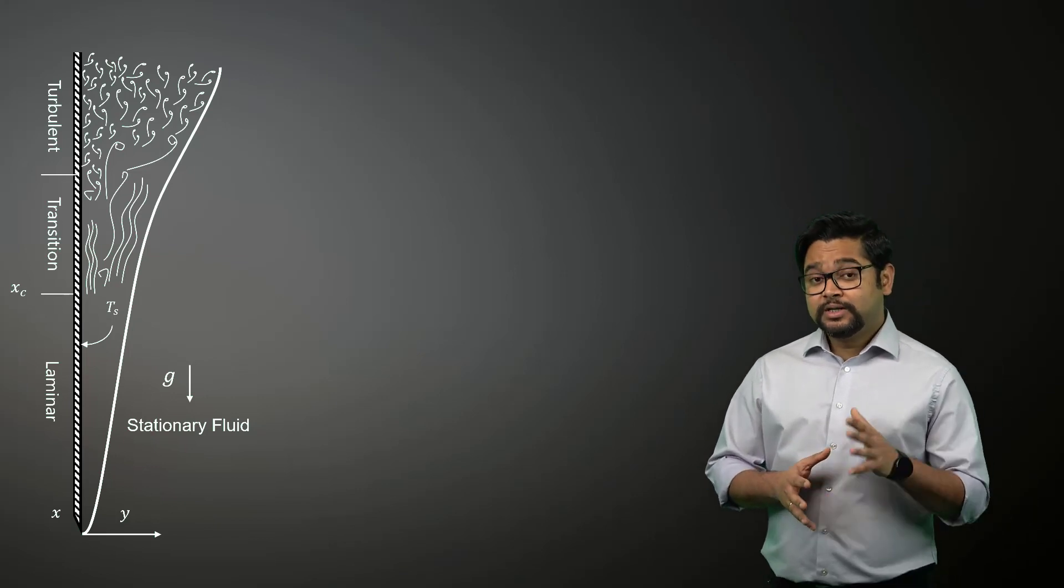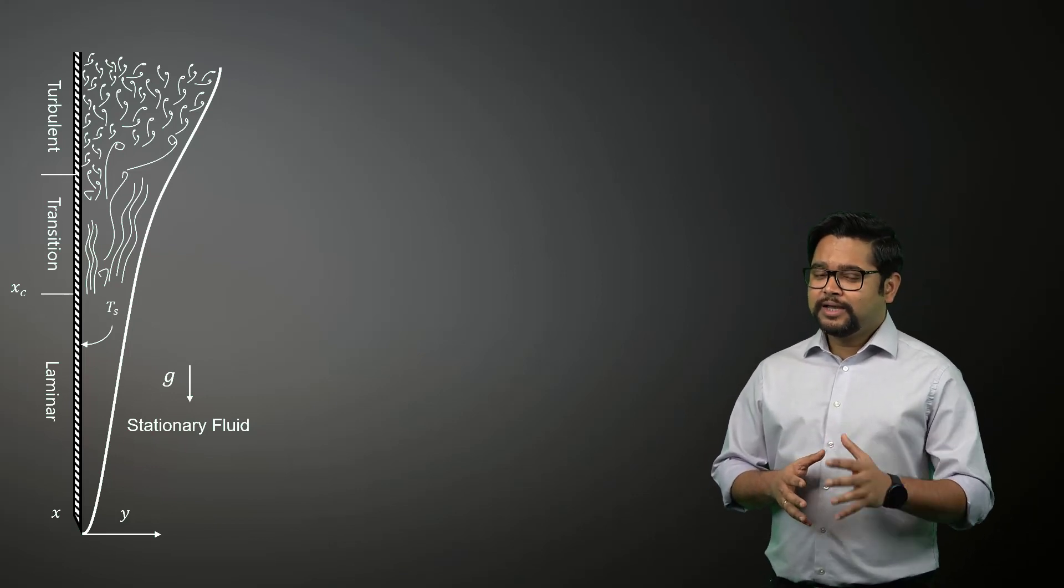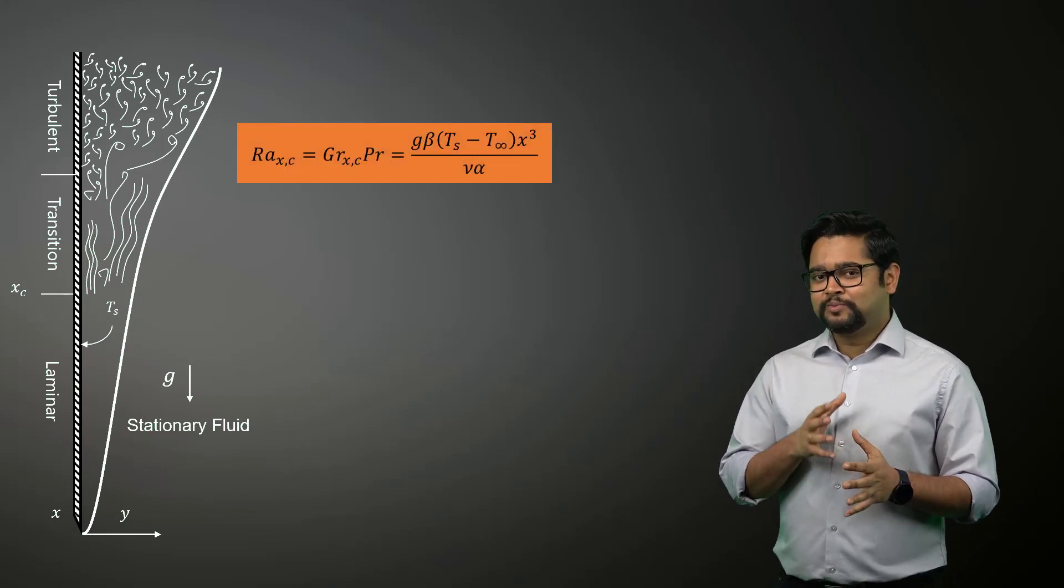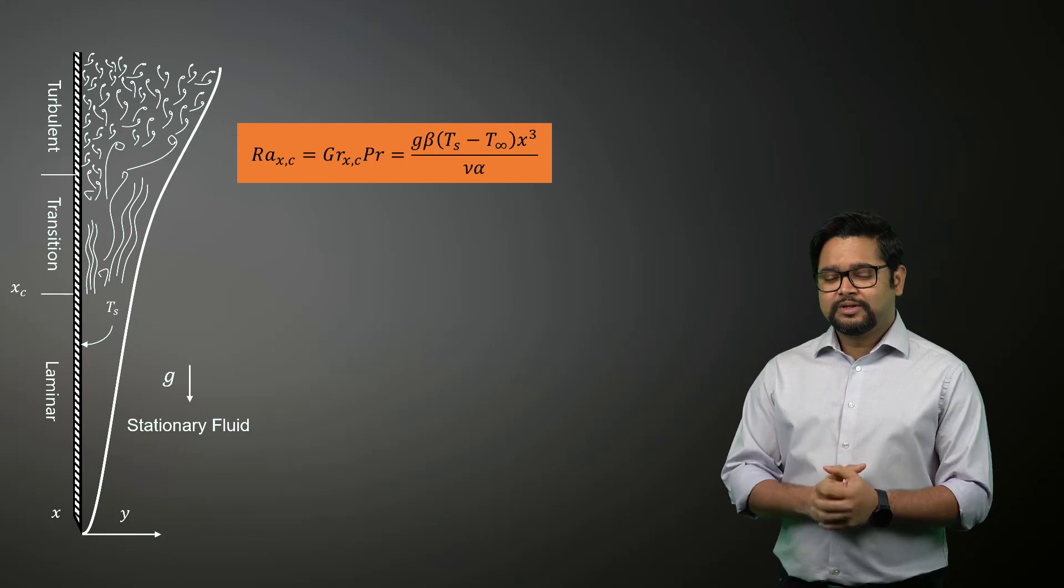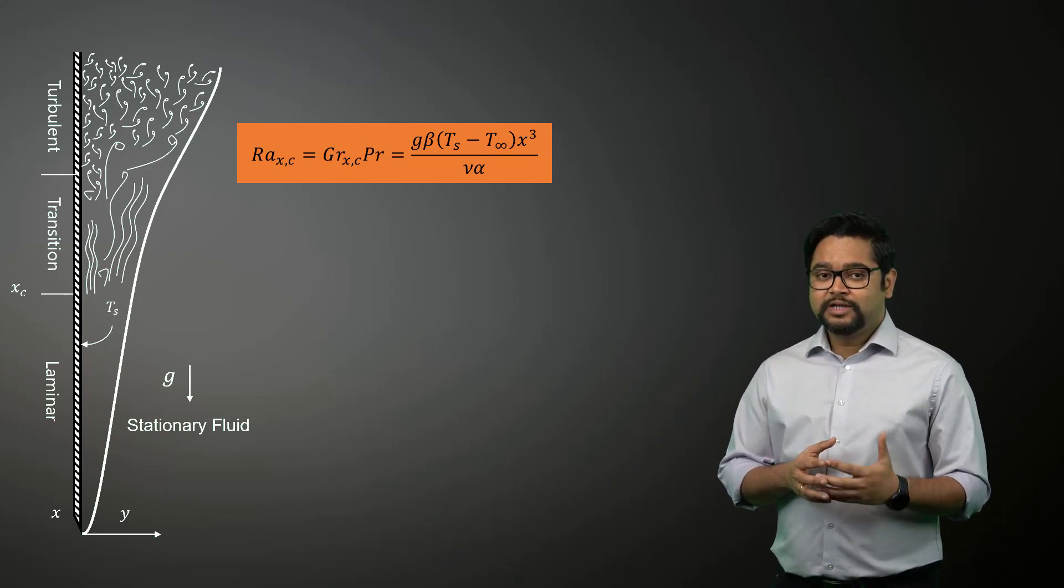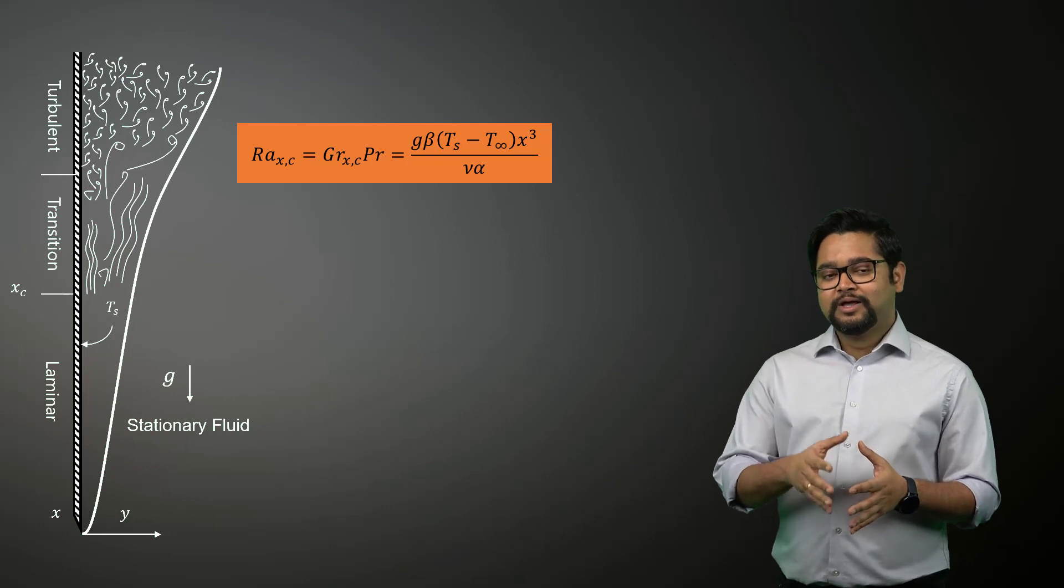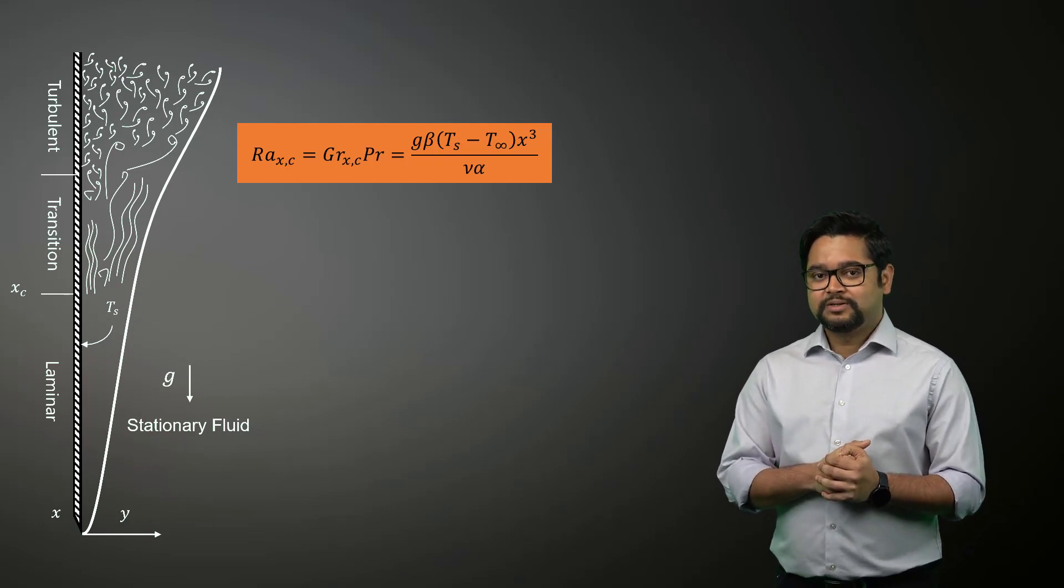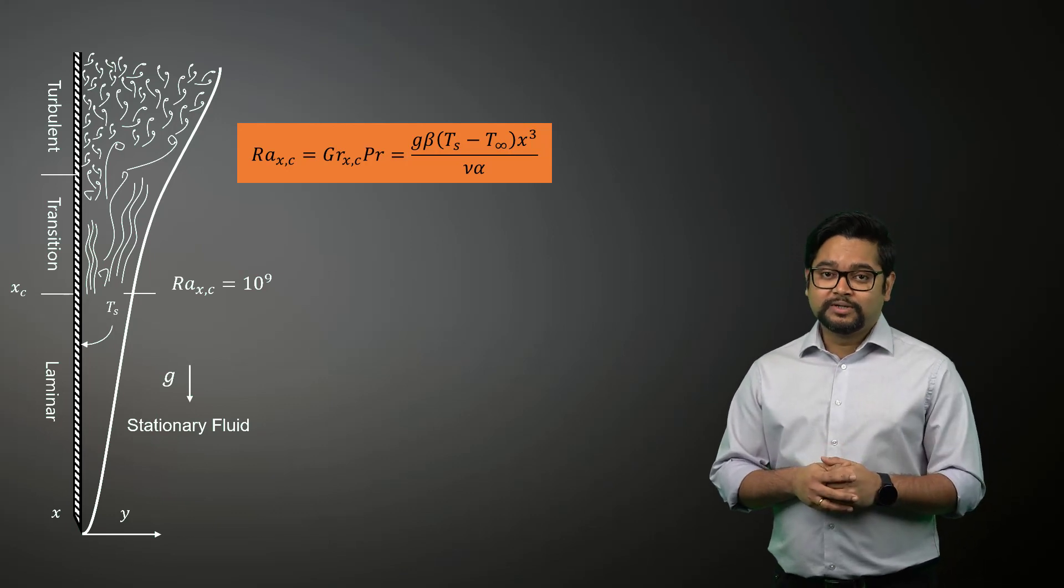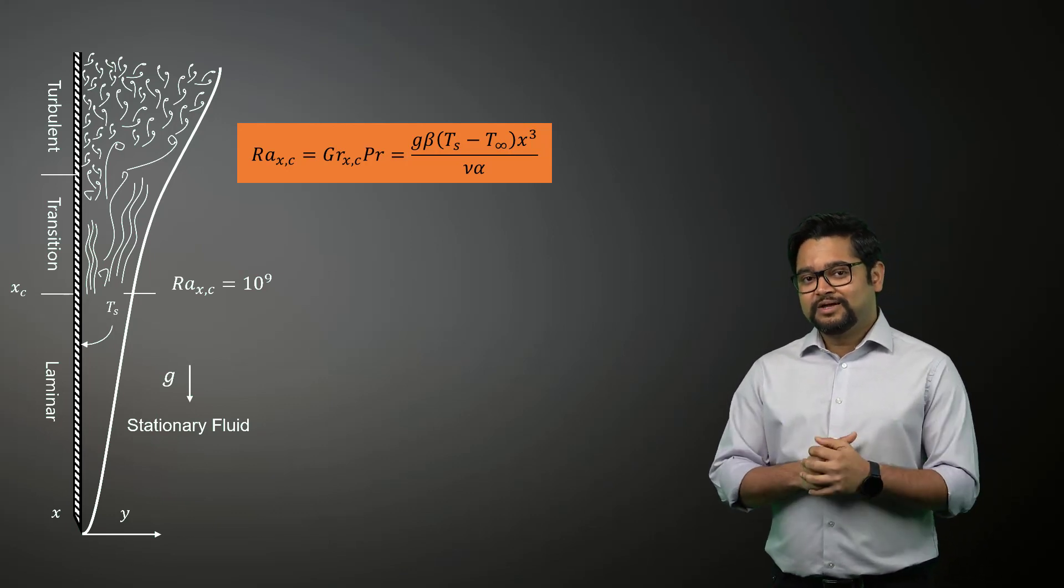In such situations, the occurrence of transition can be determined using the Raleigh number, which is simply the product of Grashof and Prandtl numbers. Raleigh number can be viewed as a ratio of buoyancy forces and the product of thermal and momentum diffusivities. In the case of vertical plates, the critical Raleigh number is 10 to the power of 9. With that, we have come to the end of this lesson.